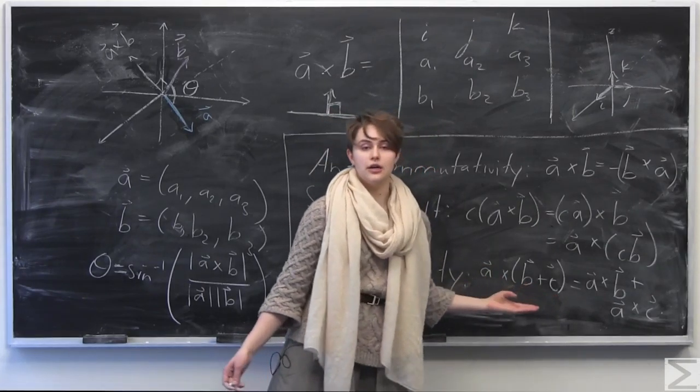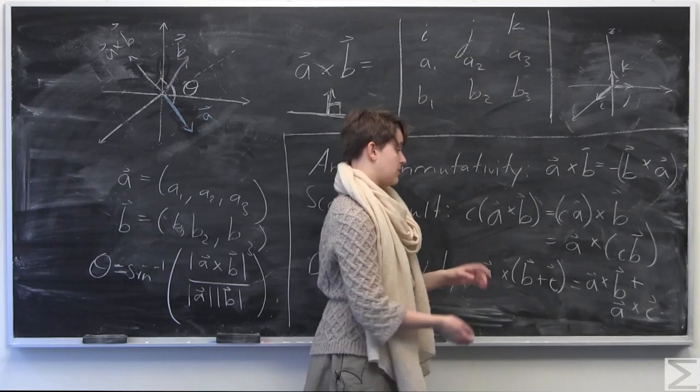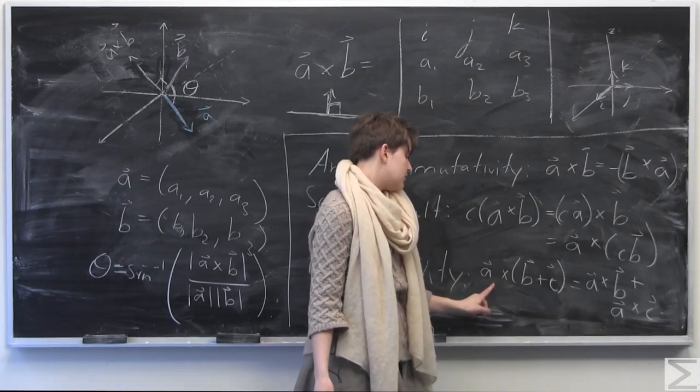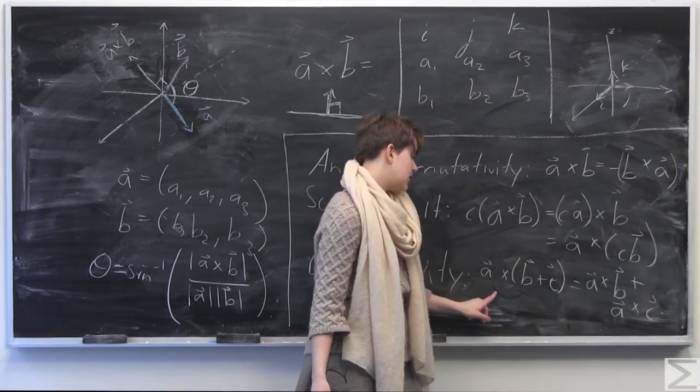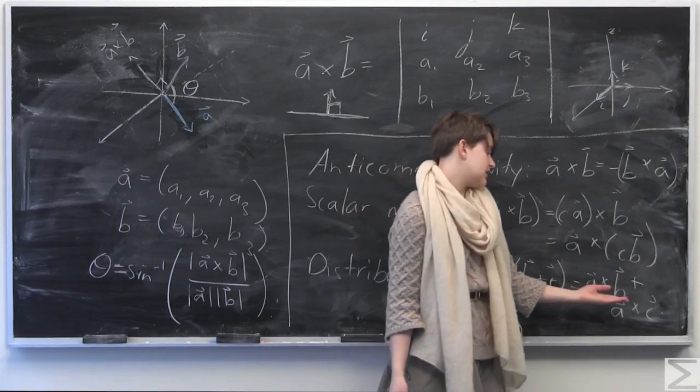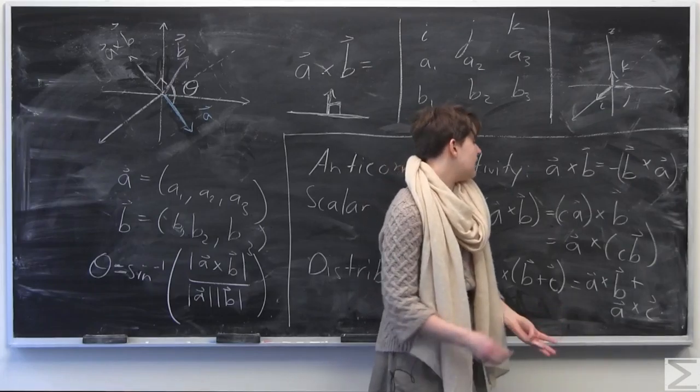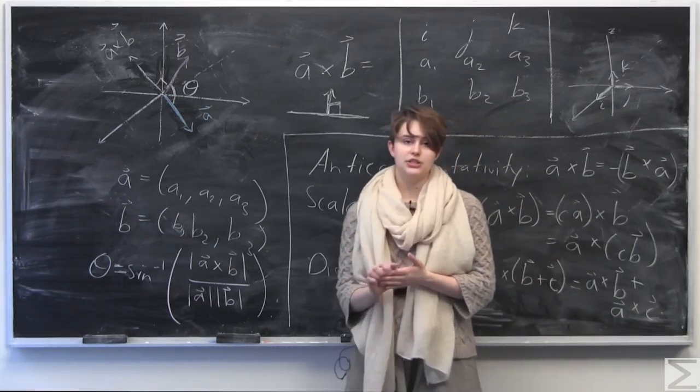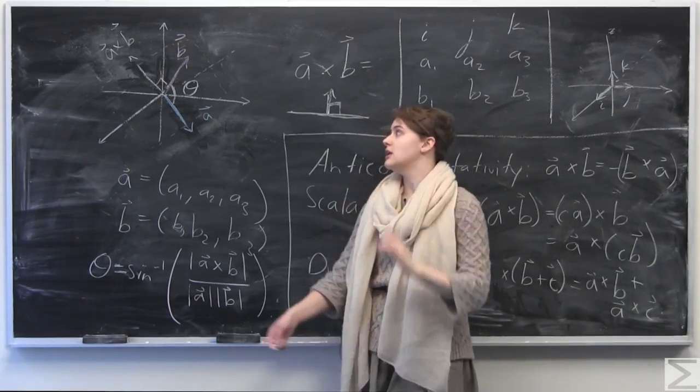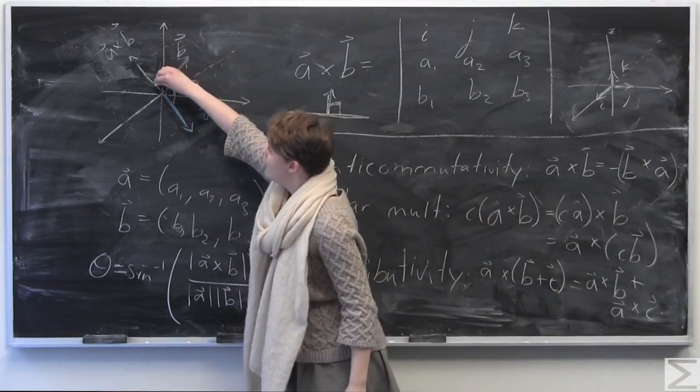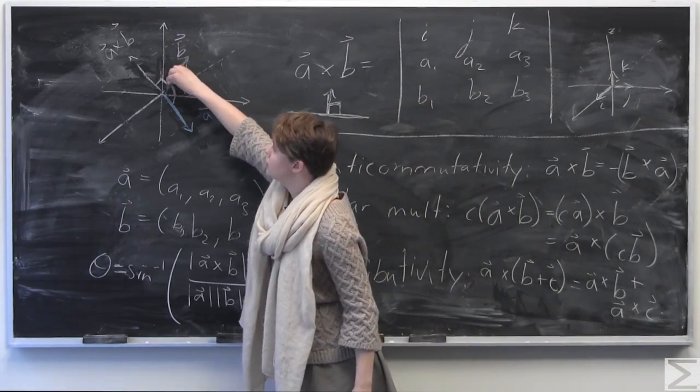And finally, here we have the distributive property, just the same as when we have the dot product is distributive, the cross product is also distributive. So if you have vector a cross the sum of some two vectors here, b and c, so a cross quantity b plus c, that would be equal to just, if we distribute the a here and the a here, it would be equal to a cross b plus a cross c. So that's the distributive property.